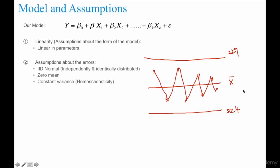You should not see any pattern as such. Meaning, your errors should not be in this way or should not be in this way, or there should not be any cyclic pattern, etc. That is what it means. And if the errors are constant, it is called as homoscedasticity.